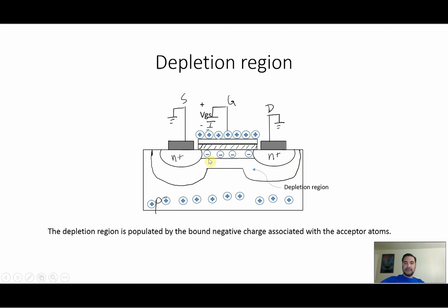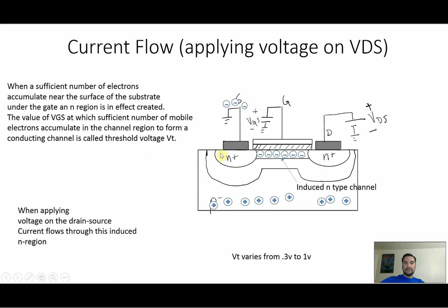All this right here is the depletion region. In order to turn on the transistor, you have to apply a VGS that is greater than a specific voltage called the threshold voltage. You have to accumulate enough positive charges so that you can attract as many negative charges. Once you reach the minimum threshold voltage, the transistor is going to start conducting and you're going to have a flow of electrons.